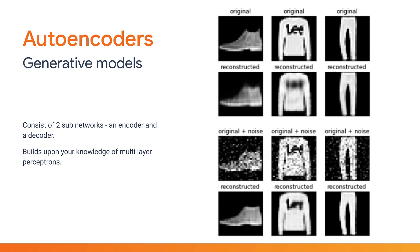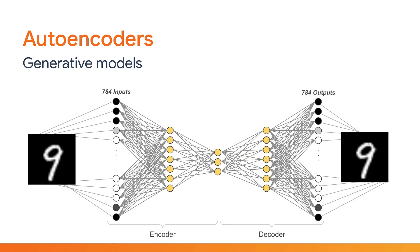First up, auto-encoders build upon your knowledge of multi-layer perceptrons. They can be used for many things such as transforming a grainy input image into one that's smoother, or even generating new images that never existed before. There are actually two sub-networks: the first half of the network acts as an encoder, and the second half is a decoder joined by the middle layer. By forcing the inputs through a middle layer with far fewer neurons than the original input size, the network encodes meaningful features about the imagery it's trained on, so it can then decode those features to recreate something meaningful at the output. You can think of this as a form of compression.